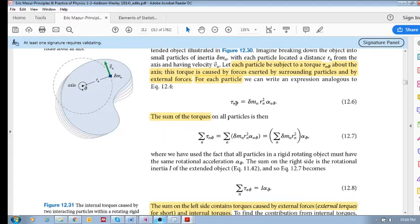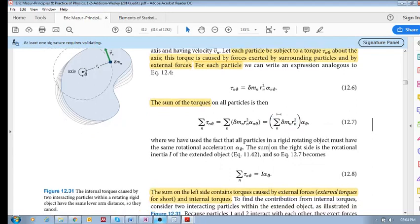we add up all these torques of every single particle that we consider on this extended object, we get the sum of the torques equal to the sum of this. And remember, if we isolate this first section, this becomes our rotational inertia for the entire object. So the sum of the torques is equal to the rotational inertia times alpha.